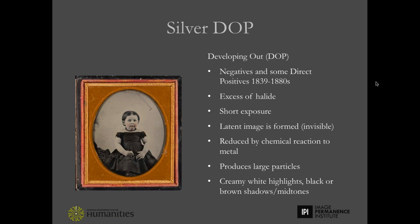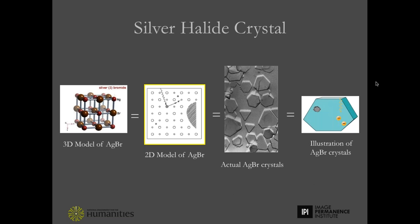Let's start by discussing how a negative is made, because this uses developing out chemistry. Developing out is sometimes shortened to DOP — developing out process, or developing out print. In developing out chemistry, the ratio of silver to halide differs from printing out chemistry. In developing out chemistry, we have more halide than silver. We only require a short exposure time, and a latent or invisible image is formed. The silver halide, this latent image, is reduced to a visible silver image through the use of a chemical solution, and these silver image particles are relatively large.